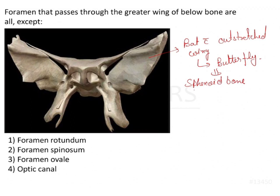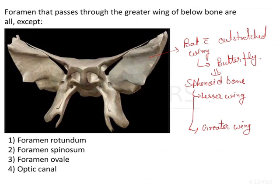The sphenoid bone is a butterfly-shaped bone and it contains two wings — one is your lesser wing and another is your greater wing. The lesser wing of the sphenoid is present at the floor of the anterior cranial fossa, and when you see from the superior view, this lesser wing is forming the floor of the anterior cranial fossa. The greater wing is forming the floor of your middle cranial fossa.